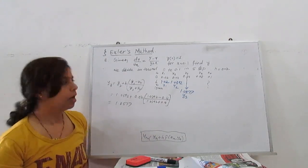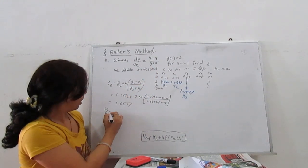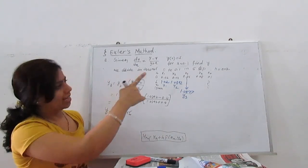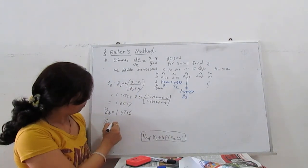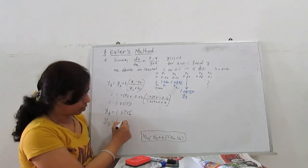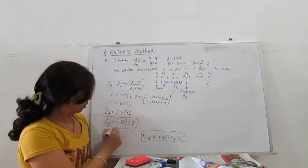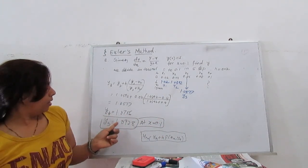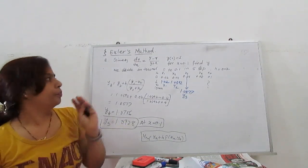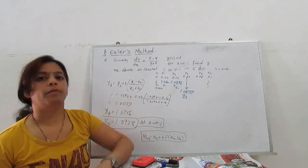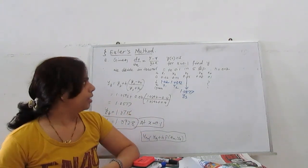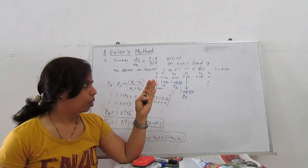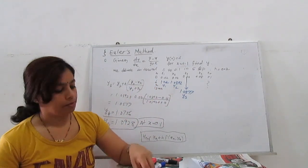Next, using x3 and y3, we find y4 = 1.0756. Then with x4 and y4 we get y5, which is our actual answer: y5 = 1.0928. So at x = 0.1, y is approximately 1.0928. This is how we apply the Euler formula iteratively — start with the initial value, choose h, then repeat. That's the repetition method.